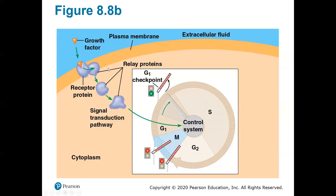A growth factor will send a signal — it could be from a neighboring cell saying that they need the cell to start to undergo synthesis or divide. There can be different kinds of growth factors. For example, say you have skin cells and you get a scratch or cut on your skin — your neighboring cells within your body will send out a growth factor indicating that cells near the wound area need to prepare for mitosis so they can replace the cells that have been damaged.